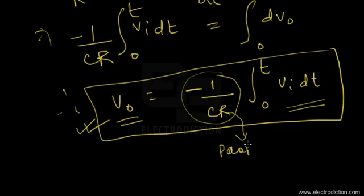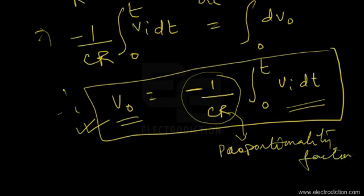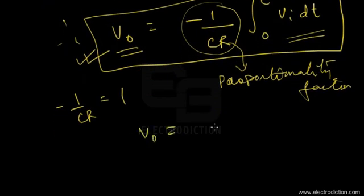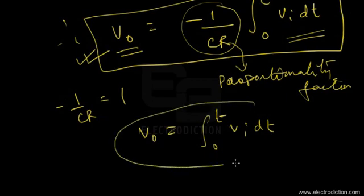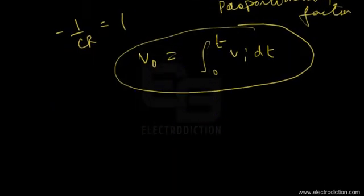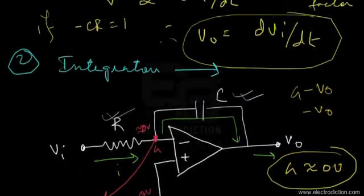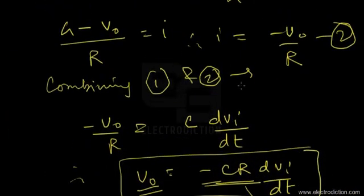Here −1/CR is the proportionality factor. If −1/CR equals one, then VO = ∫₀ᵀ VI dt — the output voltage equals the direct integration of the input voltage signal. With that, we round up our discussion. I hope you've enjoyed the tutorial. Don't forget to watch the next tutorial on op-amps. Thank you and goodbye.